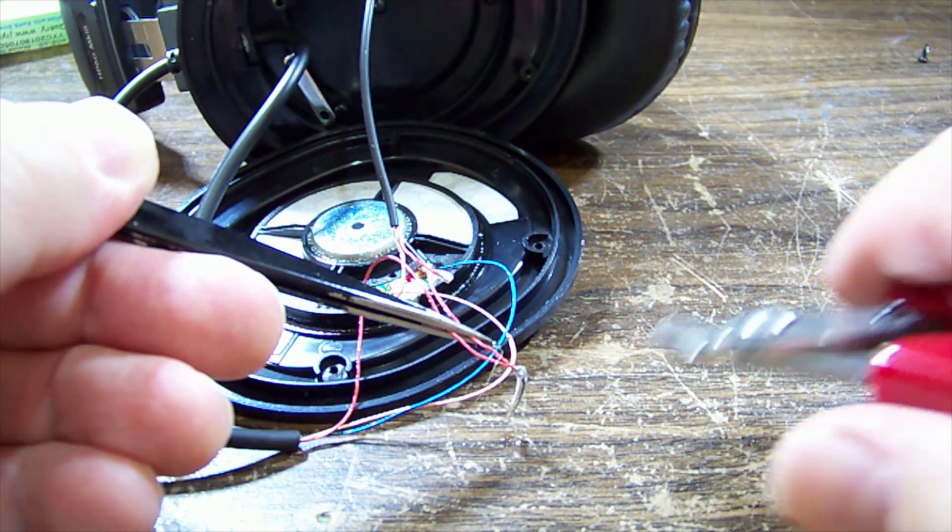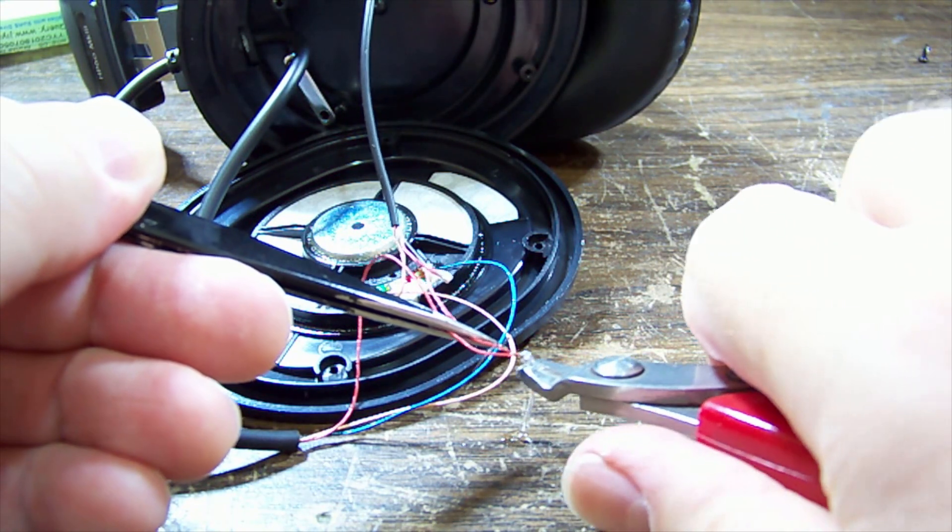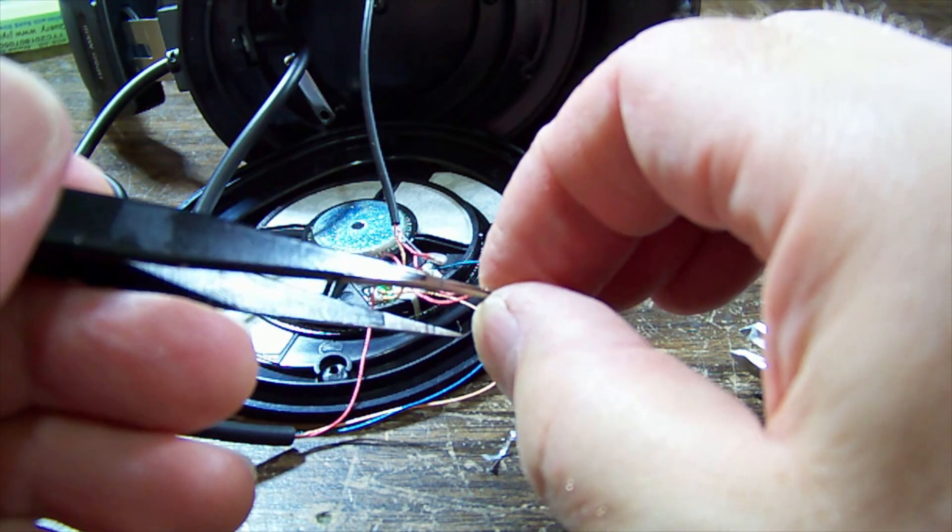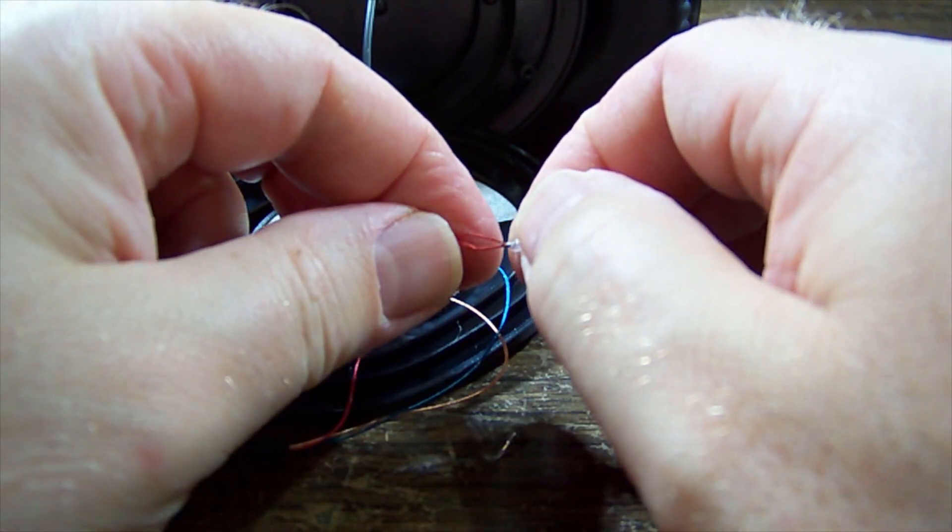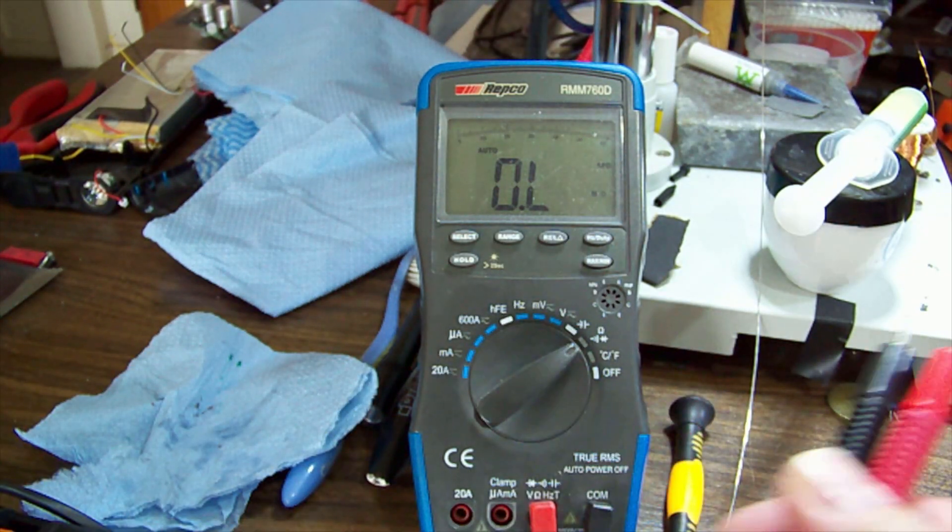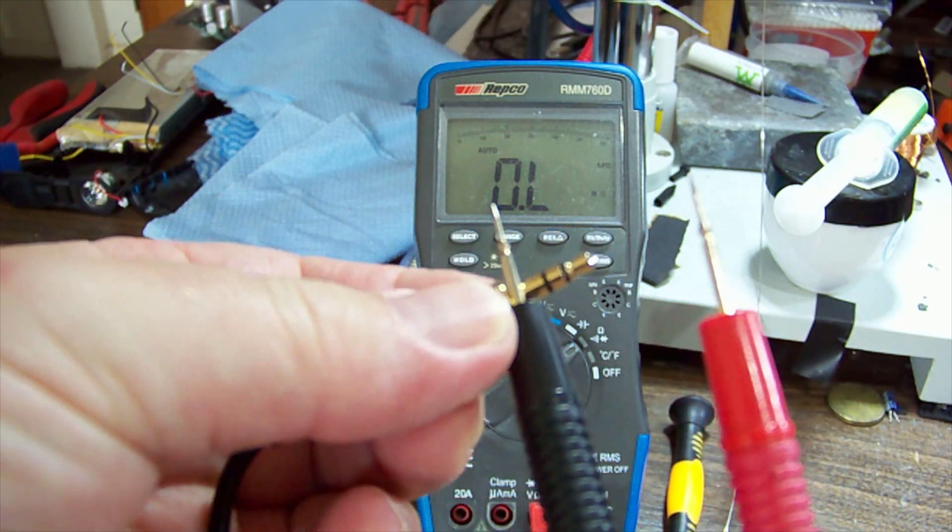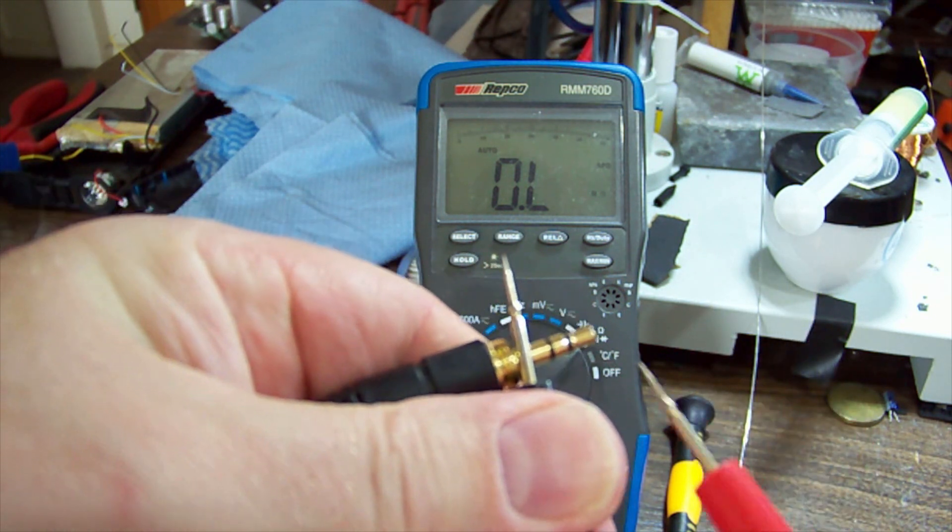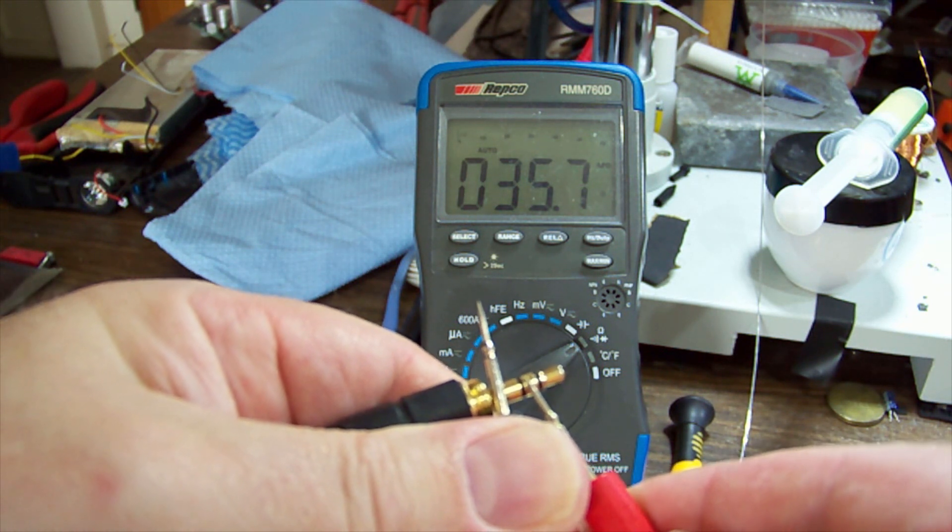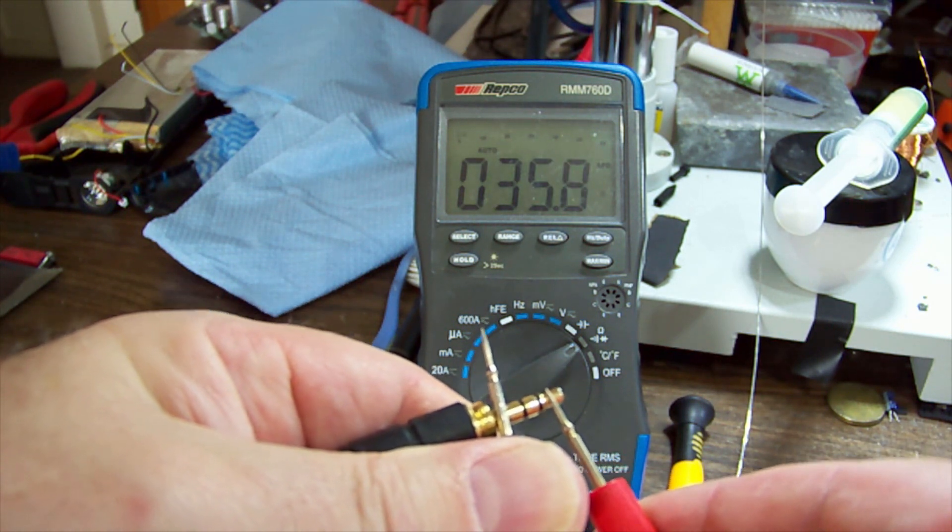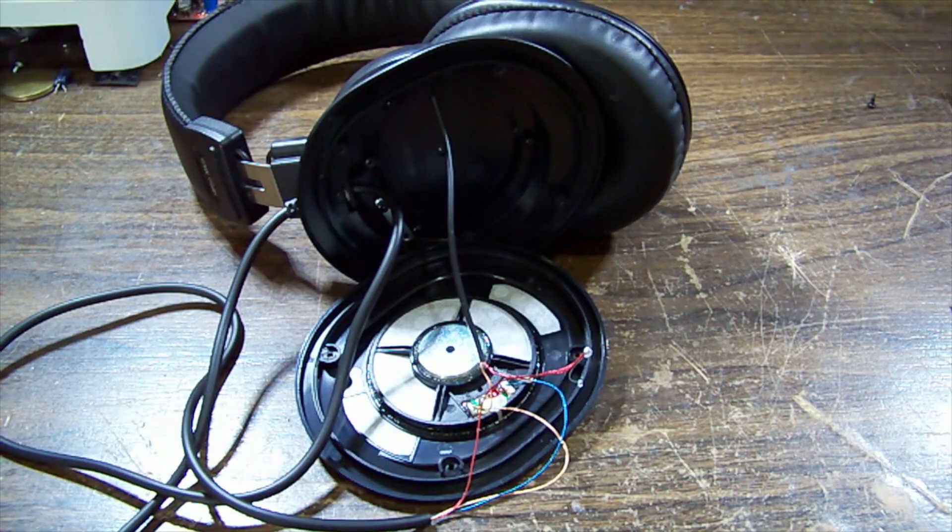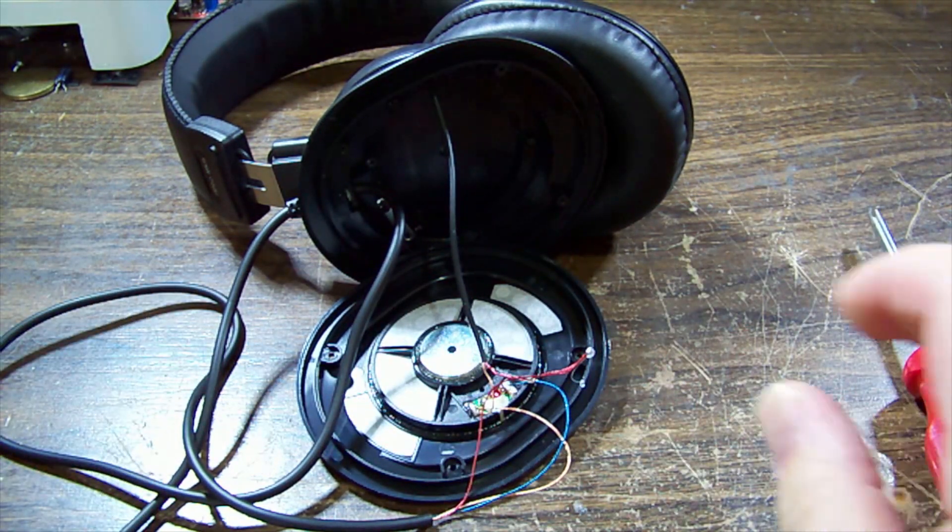You can use that of course before we stick it all back together we need to test that the cable is connected through. So we've got our negative on the inside connection and then our center pin should be one speaker and we've got 35 ohms. And the end pin should be the other speaker and we've got 35 ohms give or take. So that's connecting through they should work.